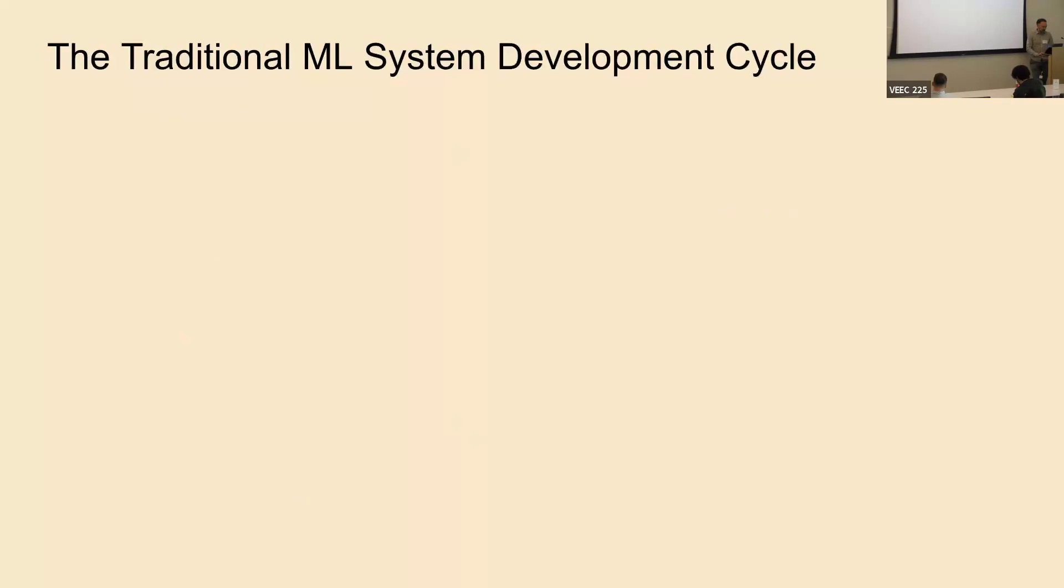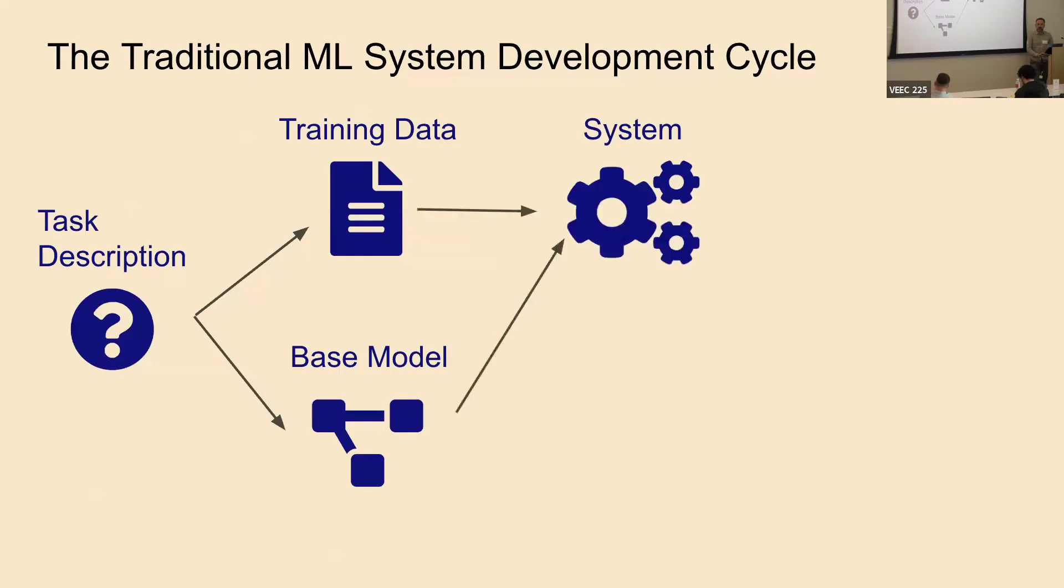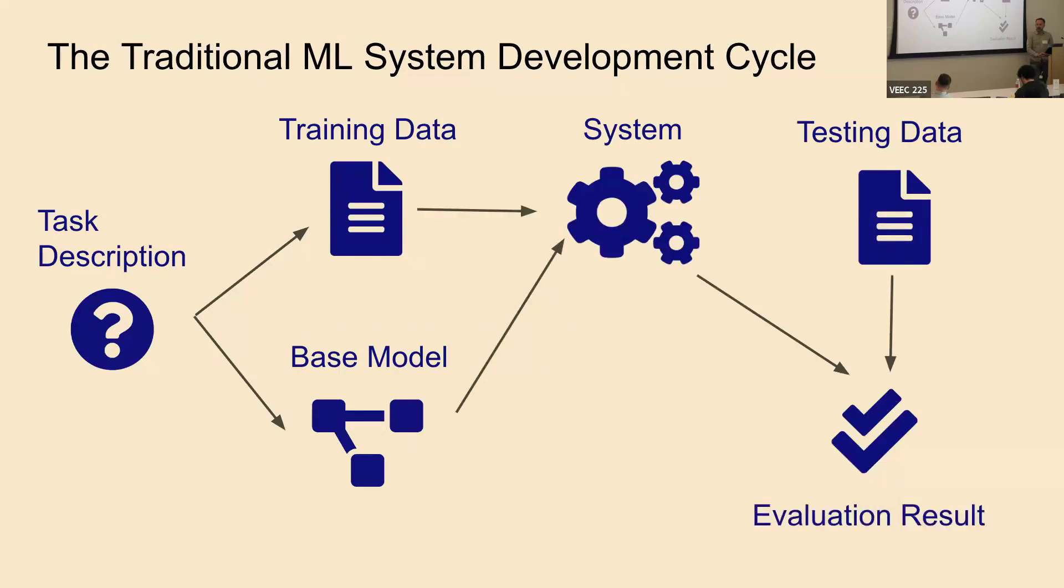If we look at the traditional ML system development life cycle, this is what our lives all looked like if we were in ML until like three years ago. We had some description of the task we wanted to solve. Based on that, we created training data. Maybe we got a base model, maybe we had a randomly initialized model. We took the training data, put it into the base model, created a system, and then we tested it and got some evaluation results. From those, we got ideas to improve our base system.